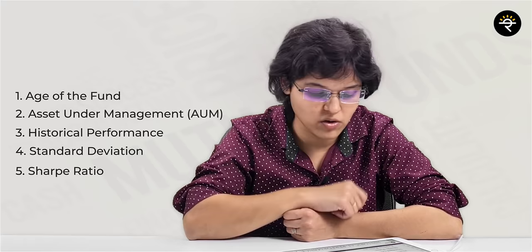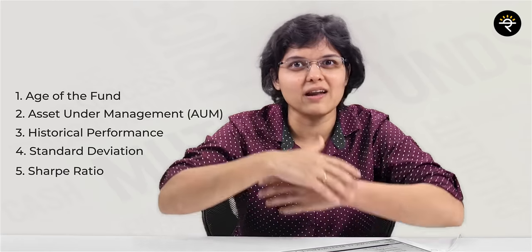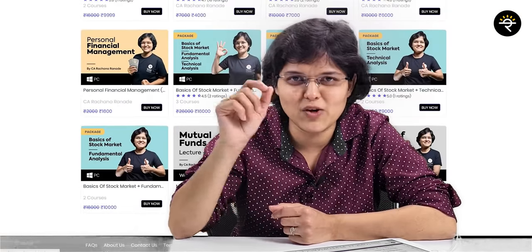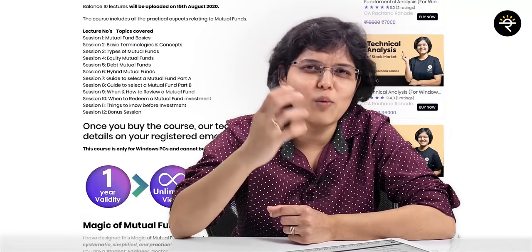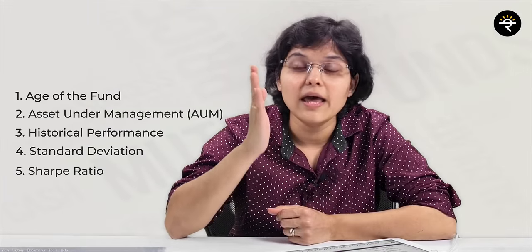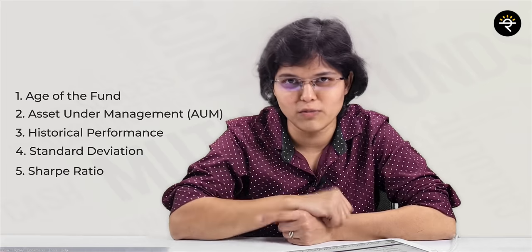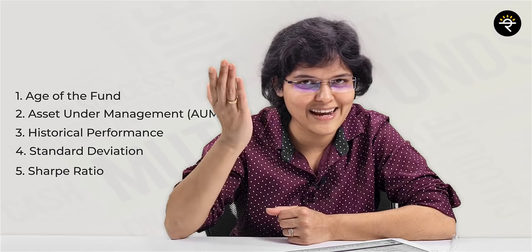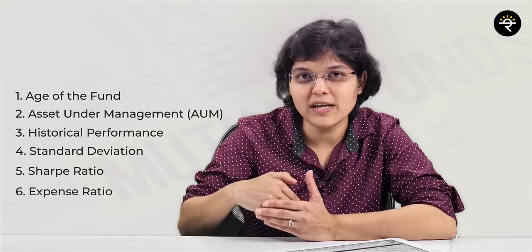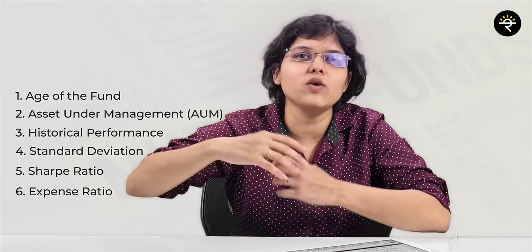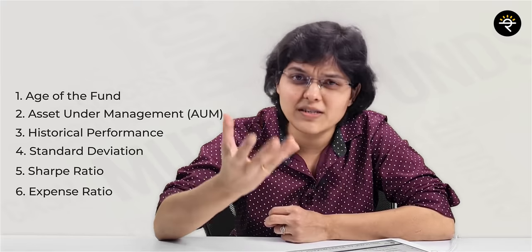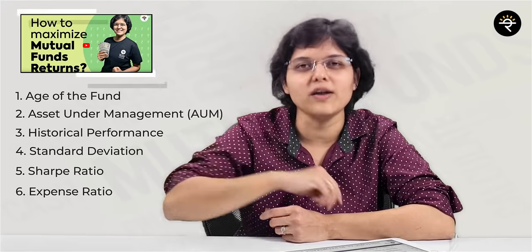Next one is the Sharpe ratio. If I were to discuss what Sharpe ratio is, we will take another lecture. I have also discussed Sharpe ratio in my lecture 'Magic of Mutual Funds' — you can enroll for that course, and I take a webinar every single month for those enrolled. The last point is expense ratio — obviously lower the better. Lower the expense ratio, higher is the possibility that your returns will be more. They are not directly connected, but somewhere they are connected.